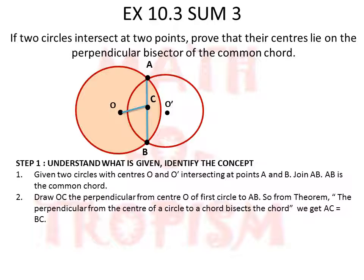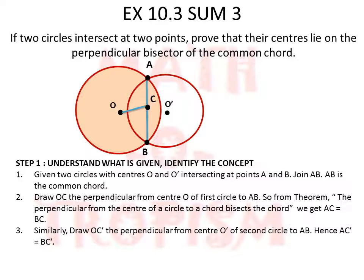Similarly, when we consider the second circle and draw a perpendicular O'C' to AB, then AC' and BC' will again be equal.